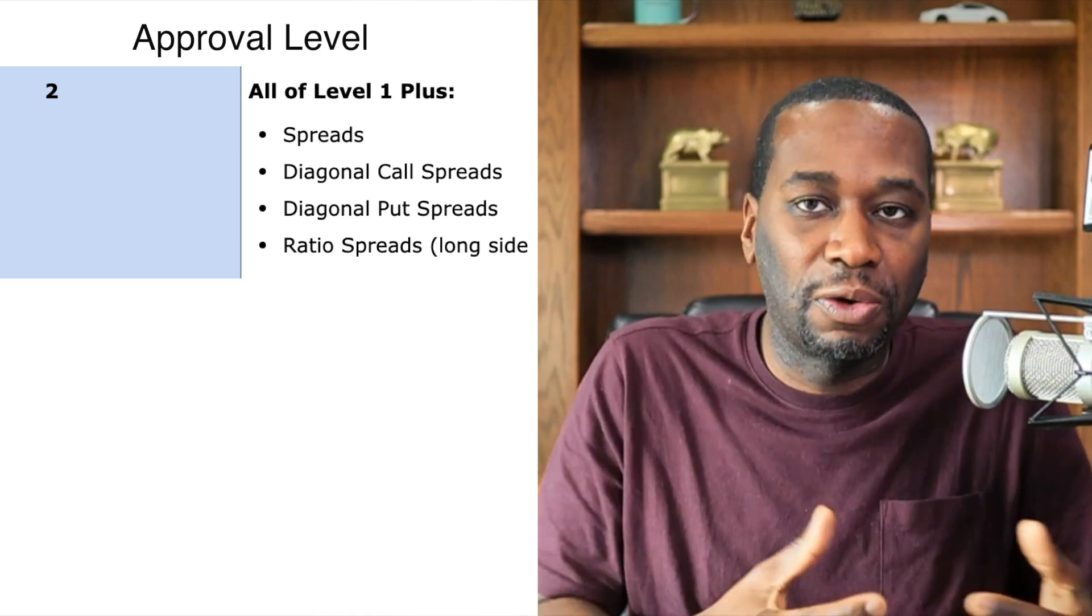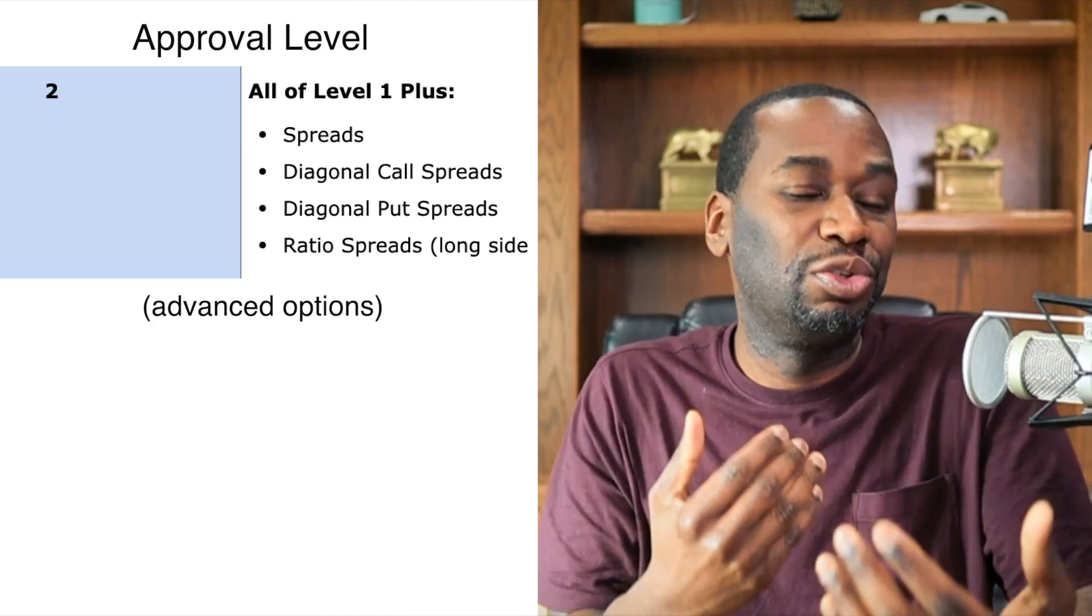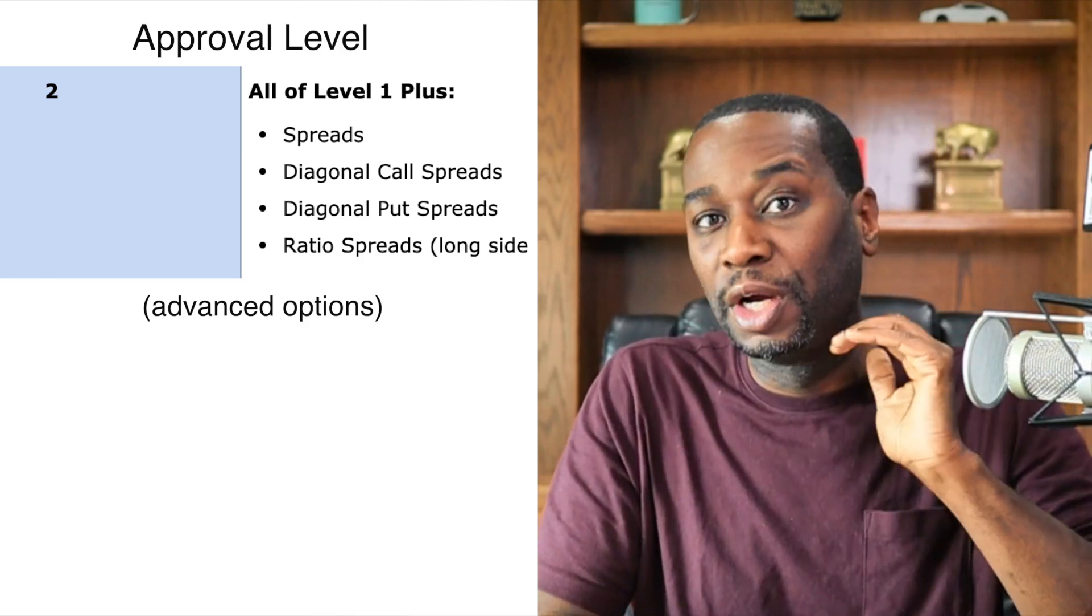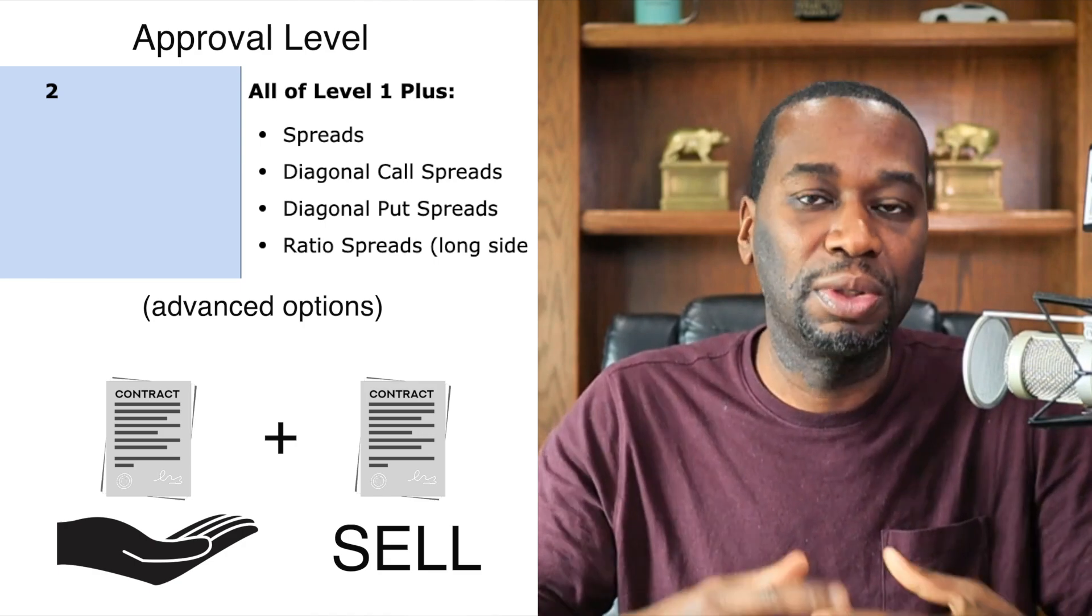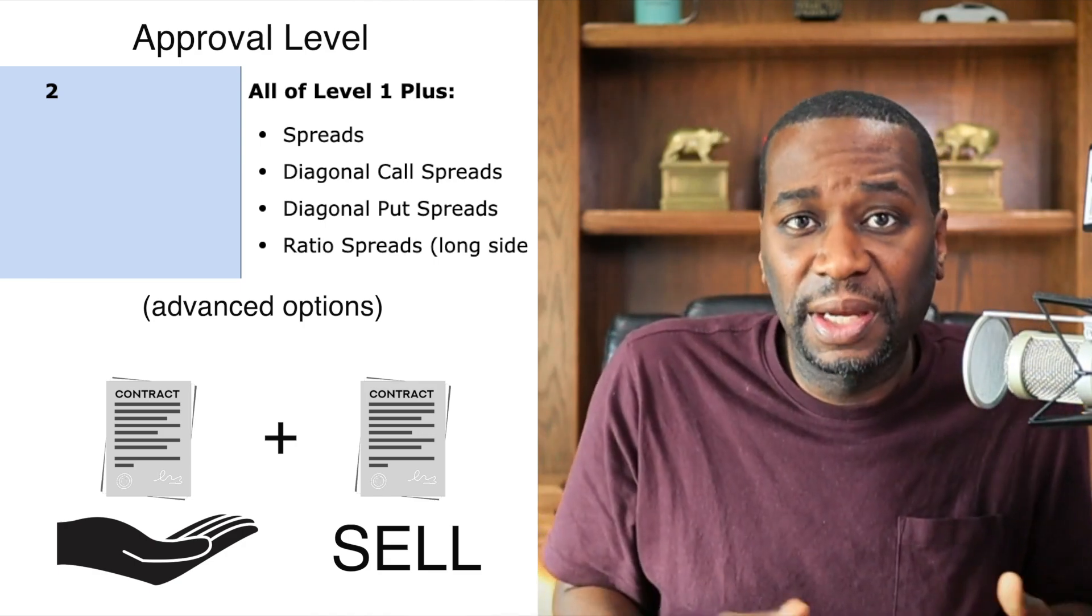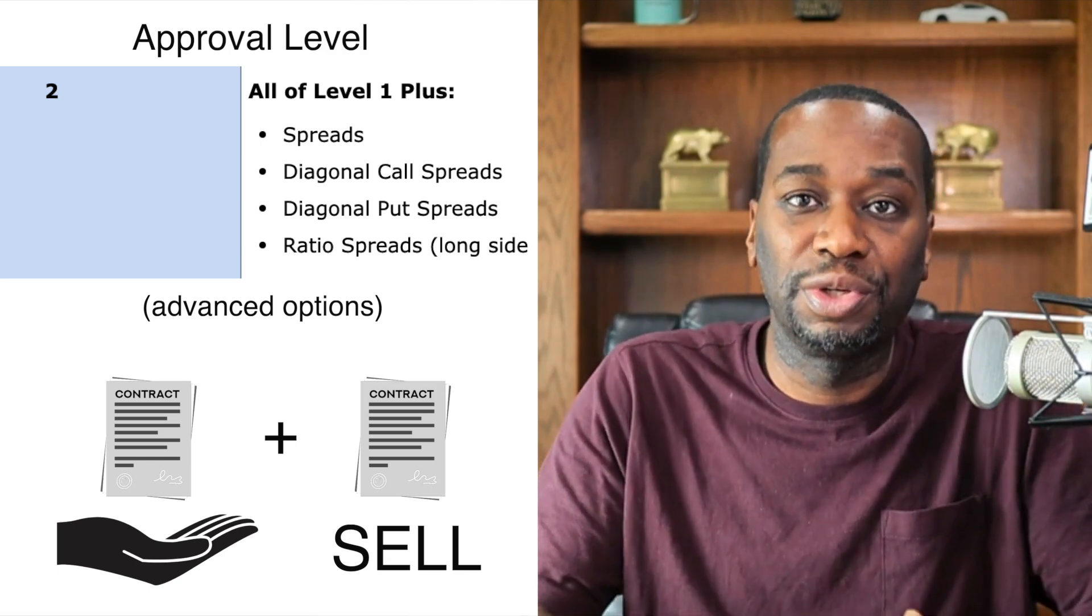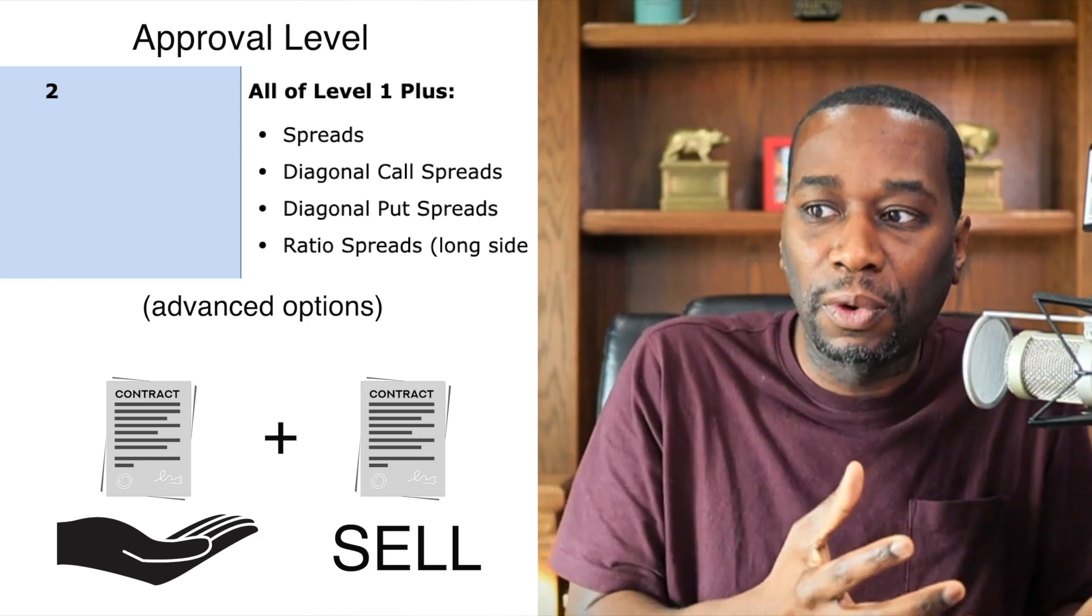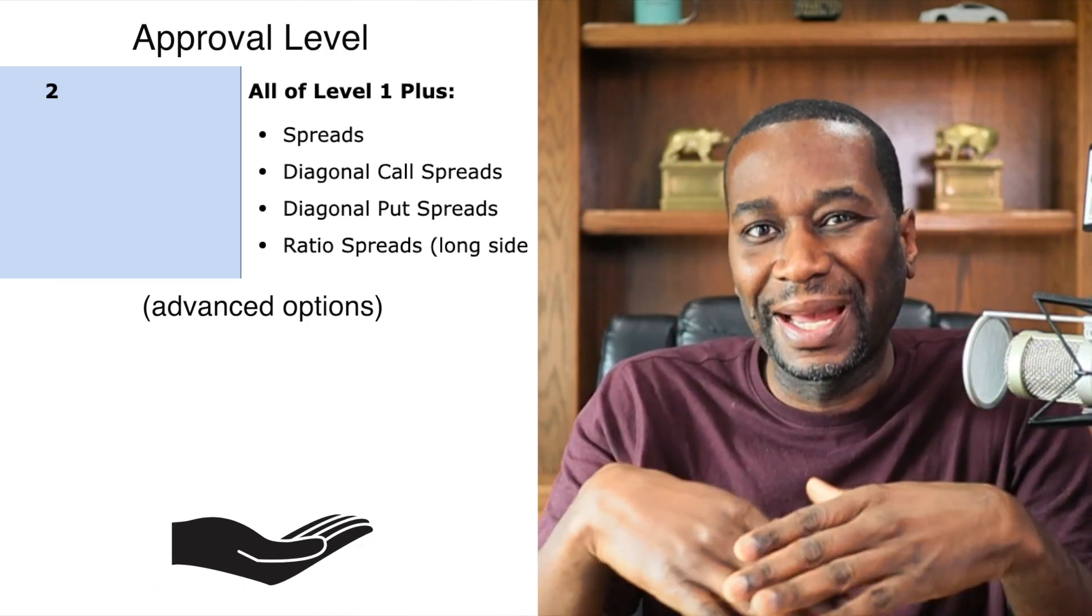You'll start to be able to do what we call inside of our course at Power Trade University Advanced Options: you'll be able to do maybe a bull call spread where you own the call and you sell a call against the call that you own, entering you into a bull call spread. You'll be able to do bear put spreads, you'll be able to do any type of combination of spreads where you're using two or more options.